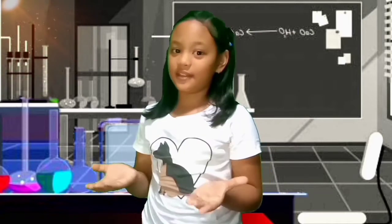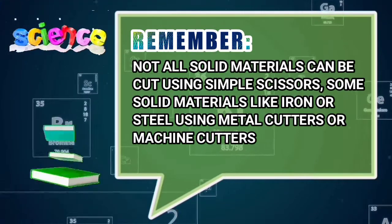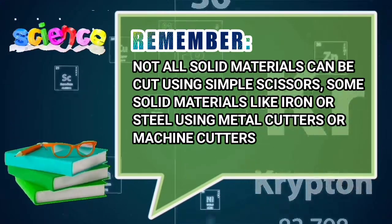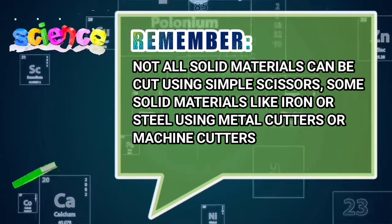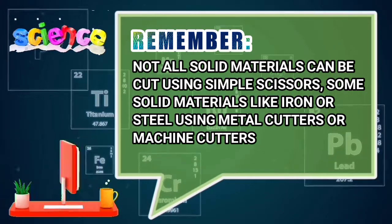After the activities that we did, we observed that no new material was formed when they were cut. Only the appearance of the materials has changed. Remember, not all solid materials can be cut using simple scissors. Some solid materials like iron or steel can be cut using metal cutters or machine cutters.